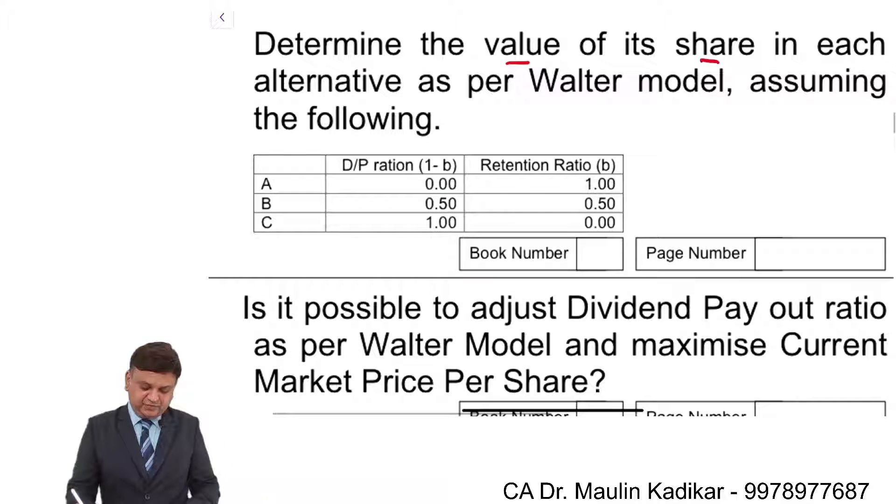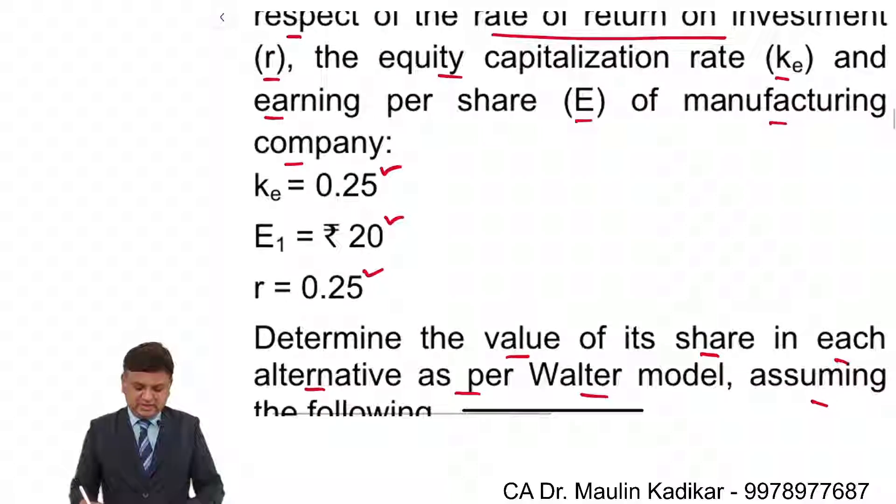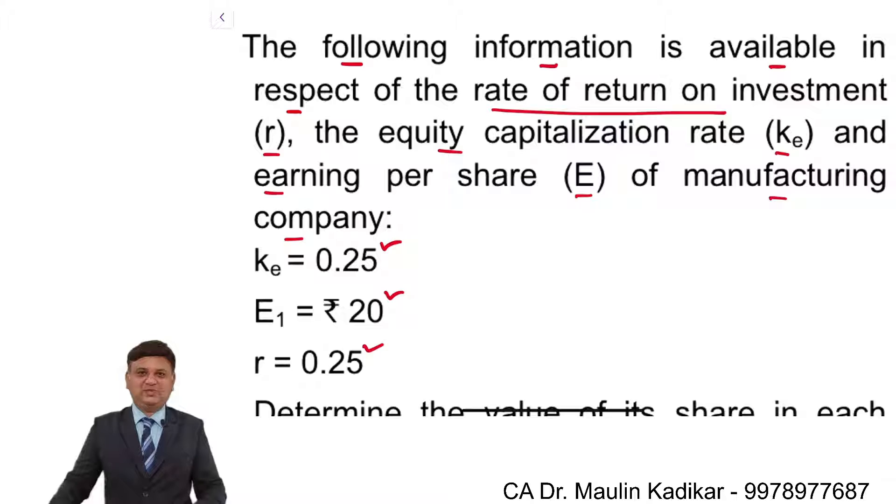Determine the value of its share in each alternative as per Walter model, assuming the following dividend payout ratios: 0, 0.5, and 1. Again, compute the answer and put your answer in the chat box.